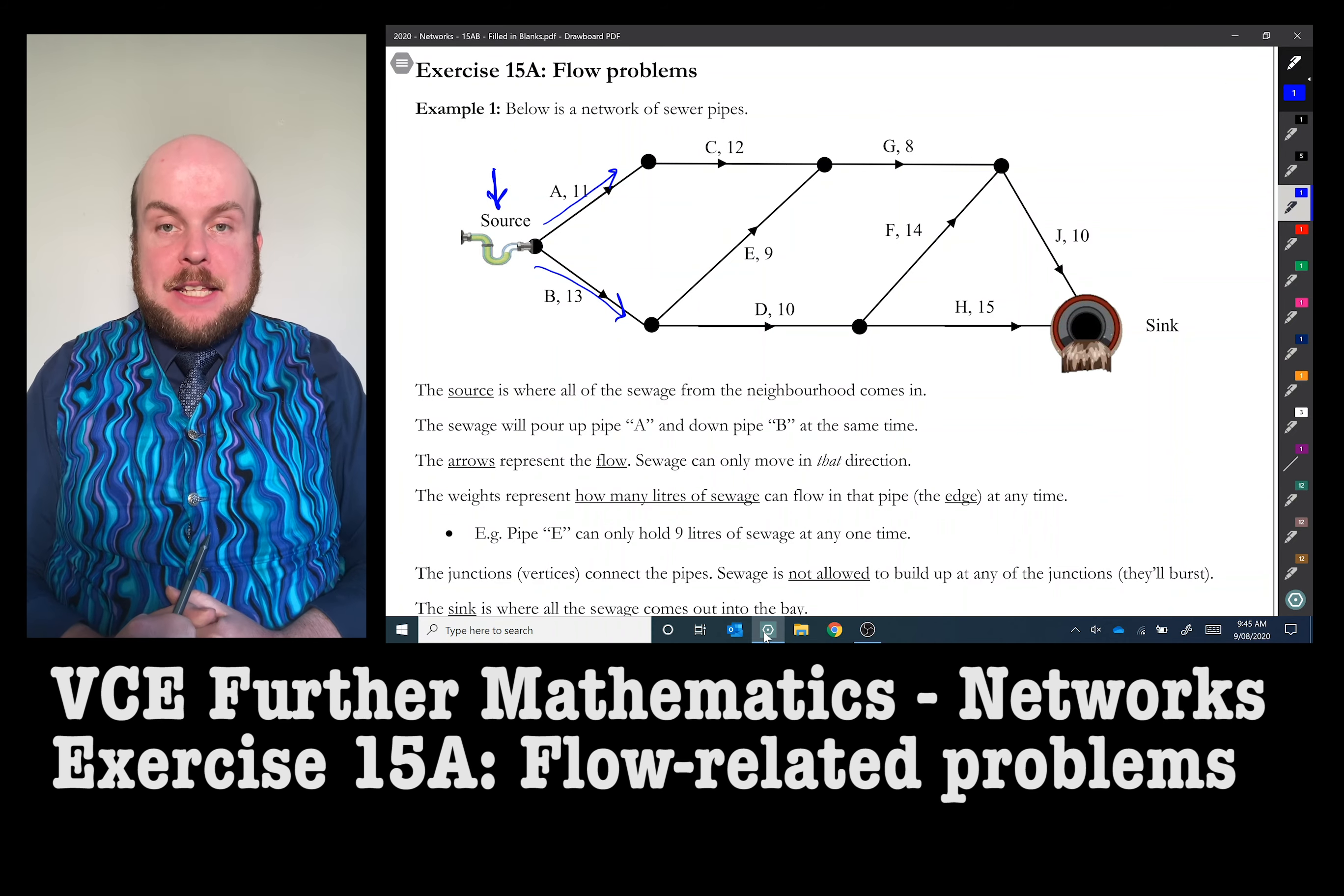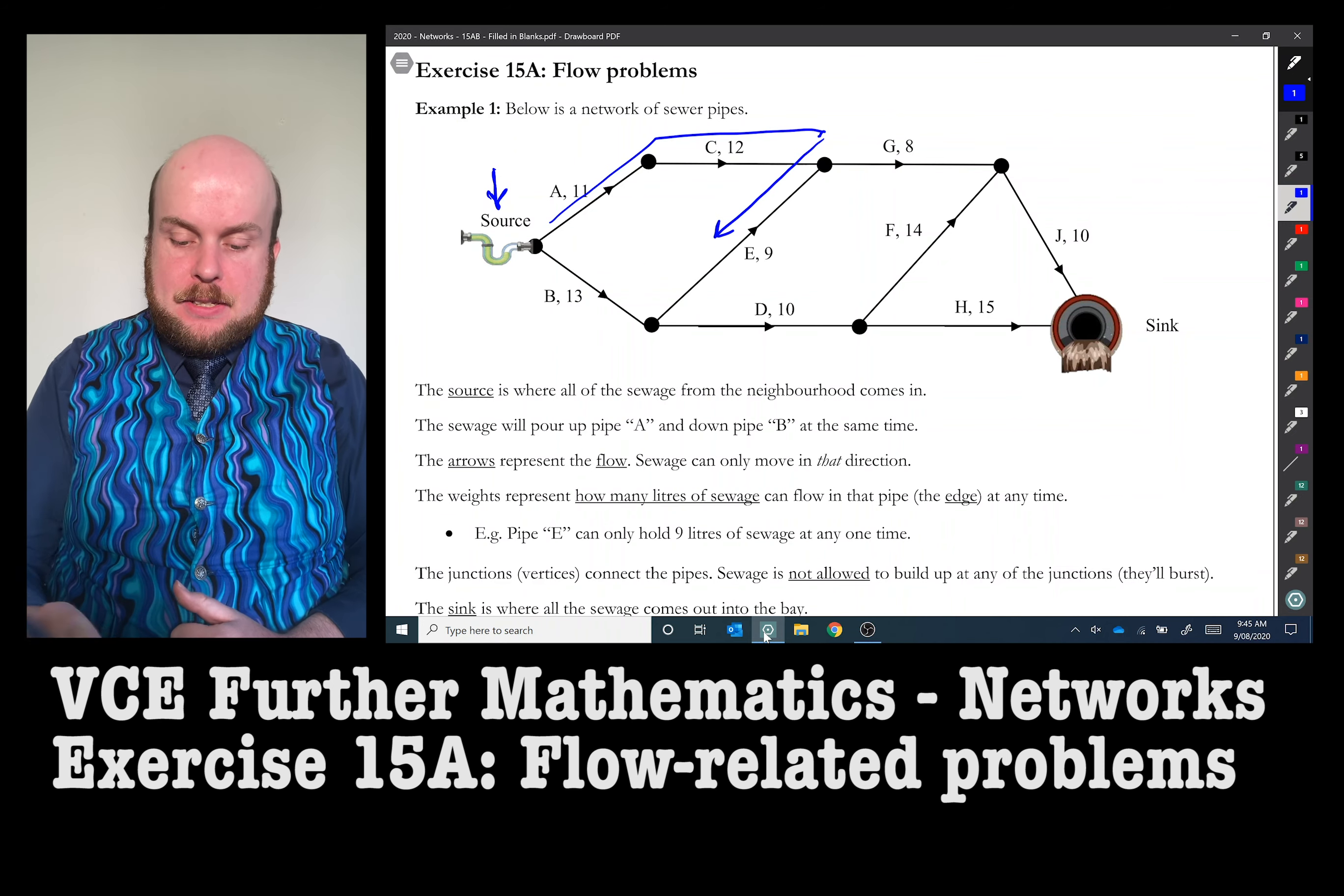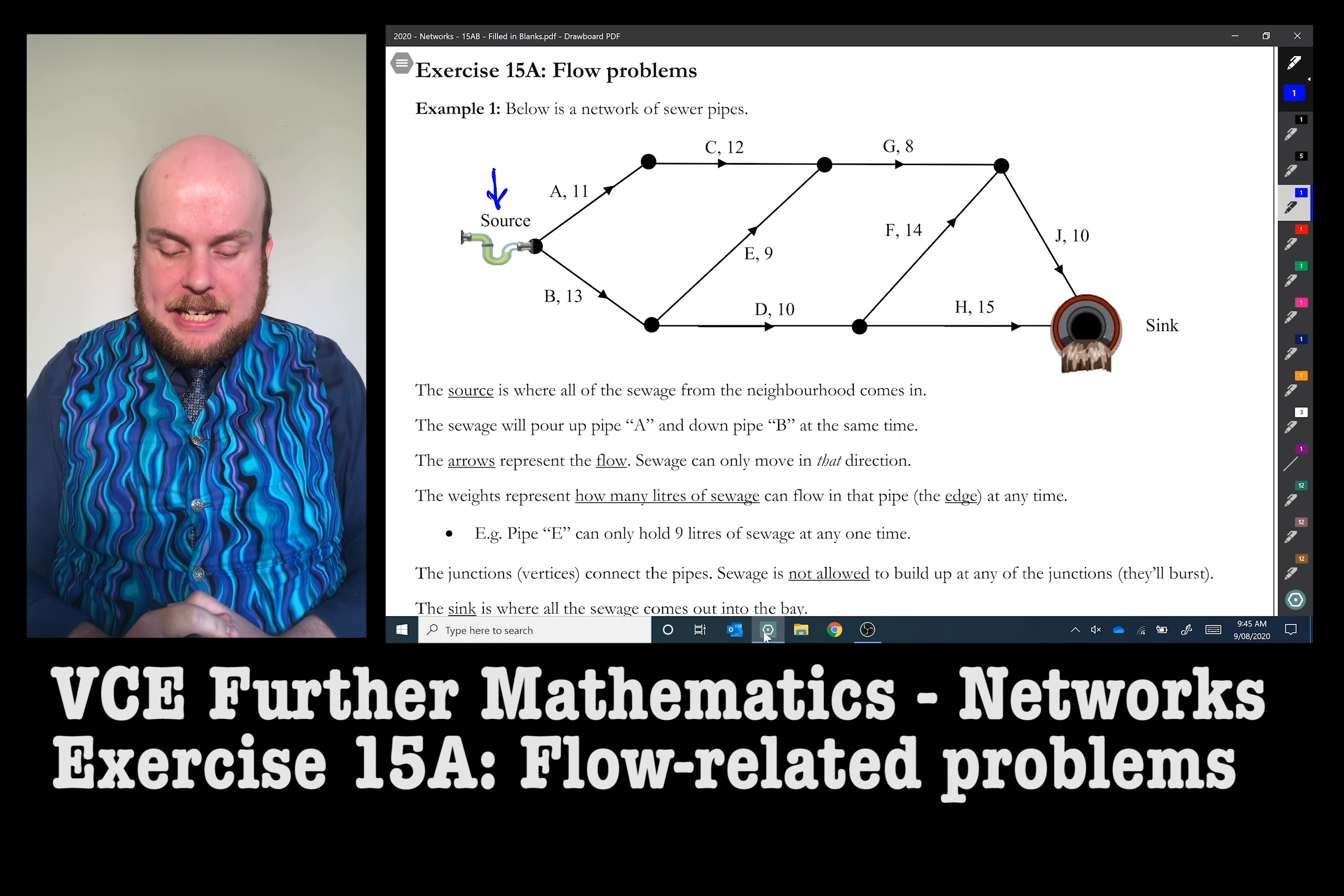The arrows represent the flow. Sewage can only move in that direction. So for example, if sewage went up this way, it cannot go back down pipe E because pipe E is pointing up. So if you like, they have been pressurized. There are ways to represent how many liters of sewage can flow in that pipe or the edge at any time.